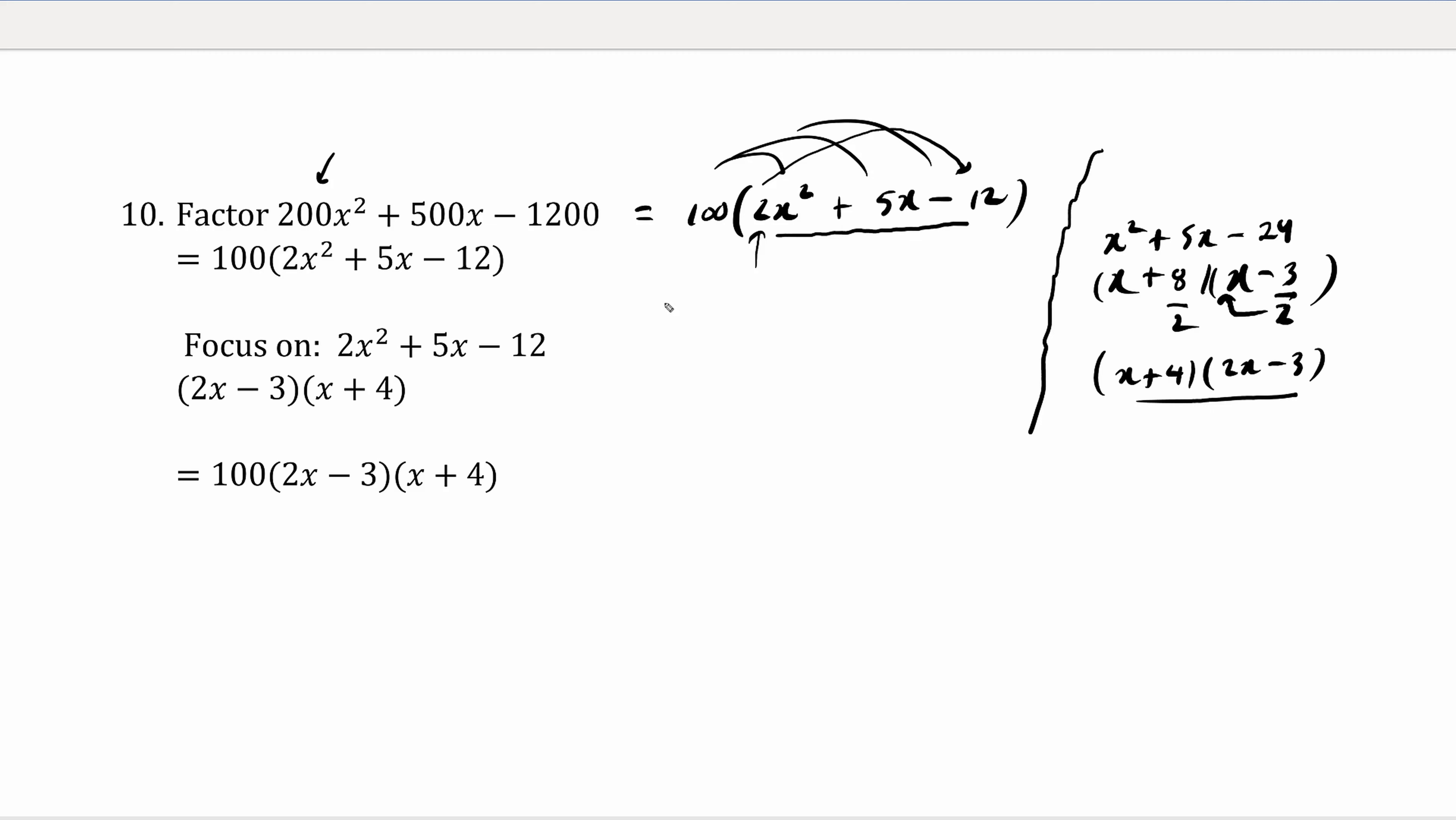Do not forget about the original 100 that has already been factored out. So the final answer is 100 times x plus 4 times 2x minus 3.